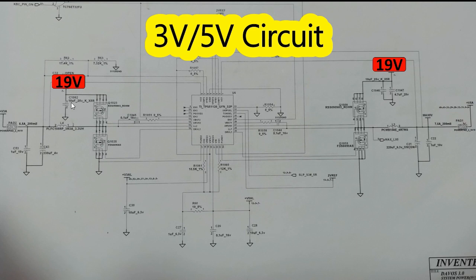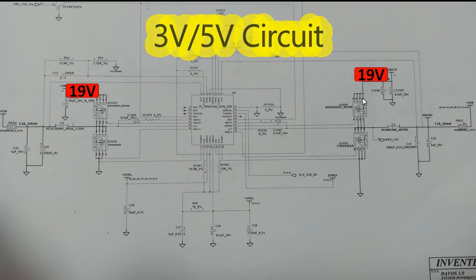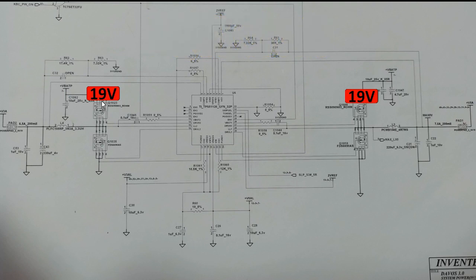Here we have 19 volts, and over here also we have 19 volts. This 19 volt is applied to the capacitors on both channels — those capacitors eliminate the noise from the signal. Then the 19 volt is applied to the drain of each MOSFET, as you can see. So we have the drain here, and we have the source on three pins. The gate is connected directly to the IC for both MOSFETs.